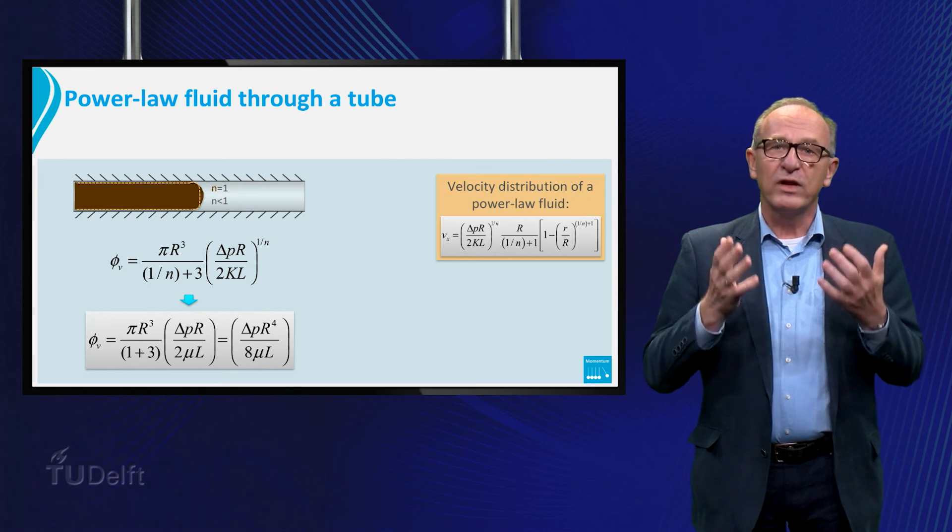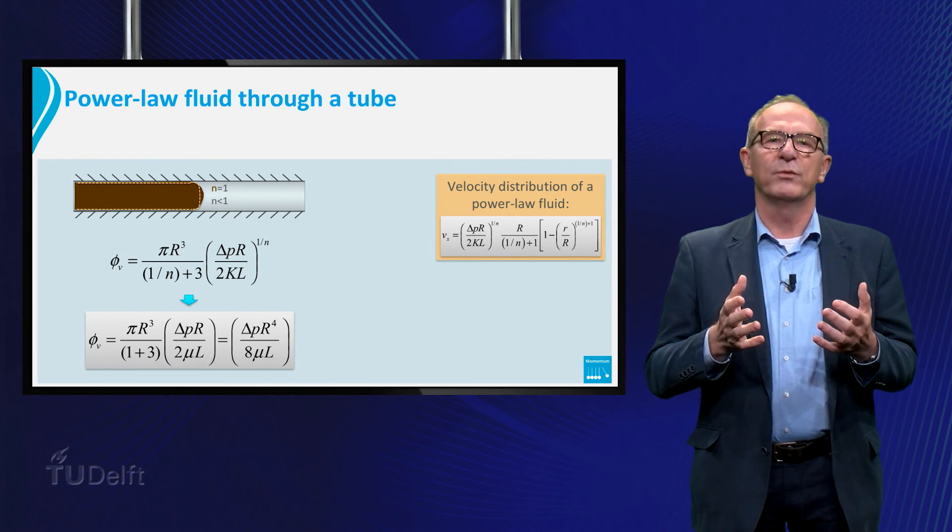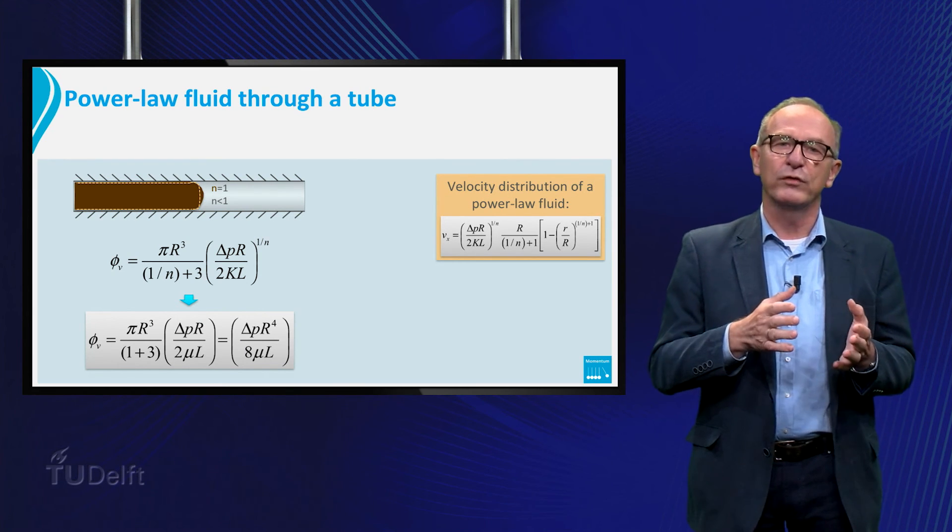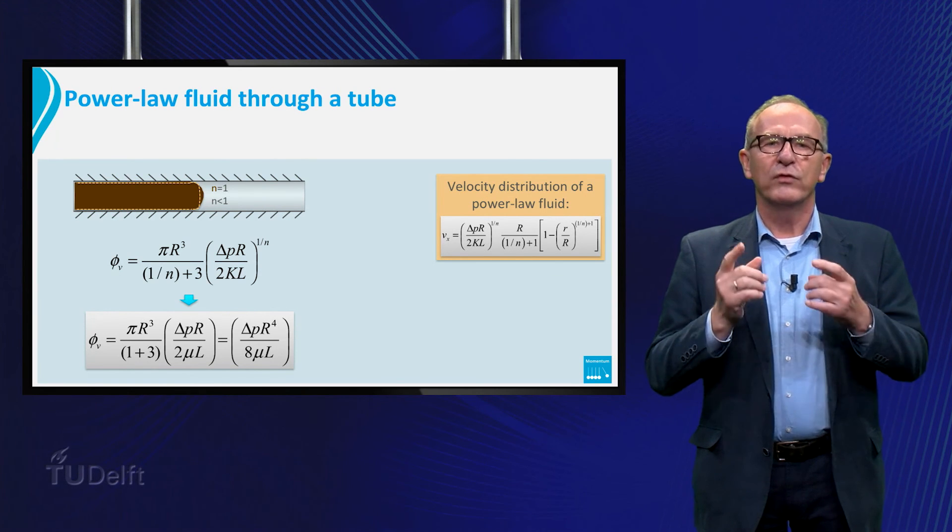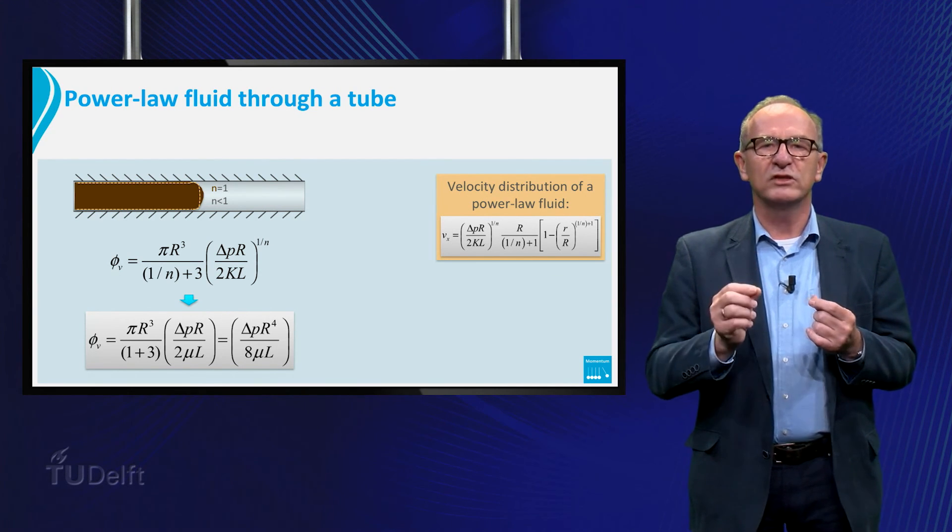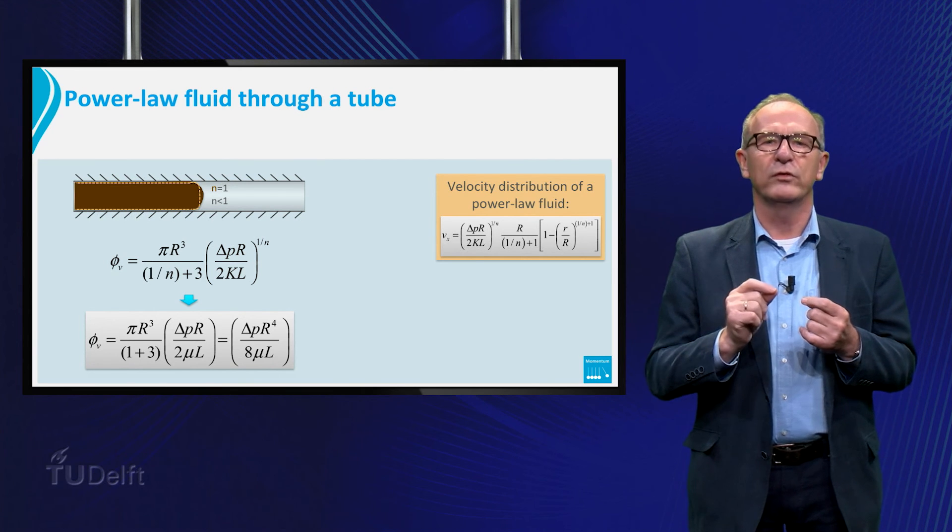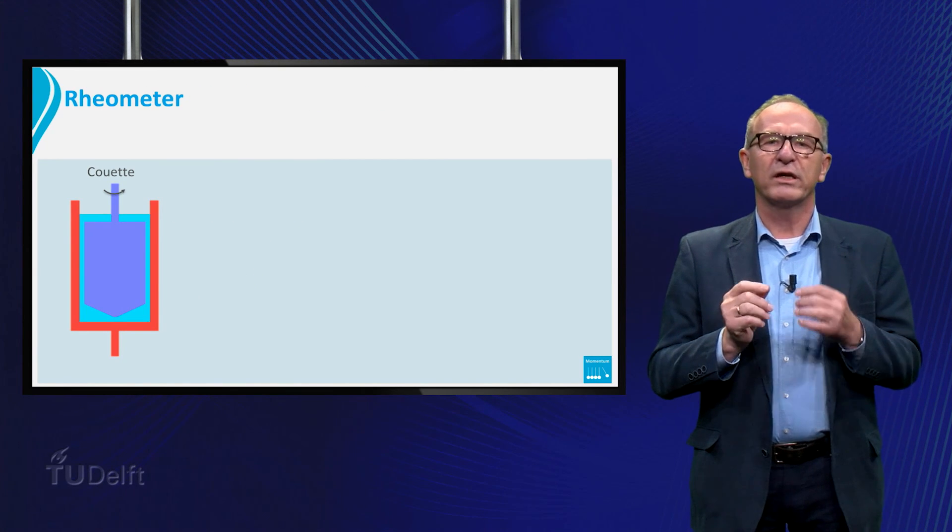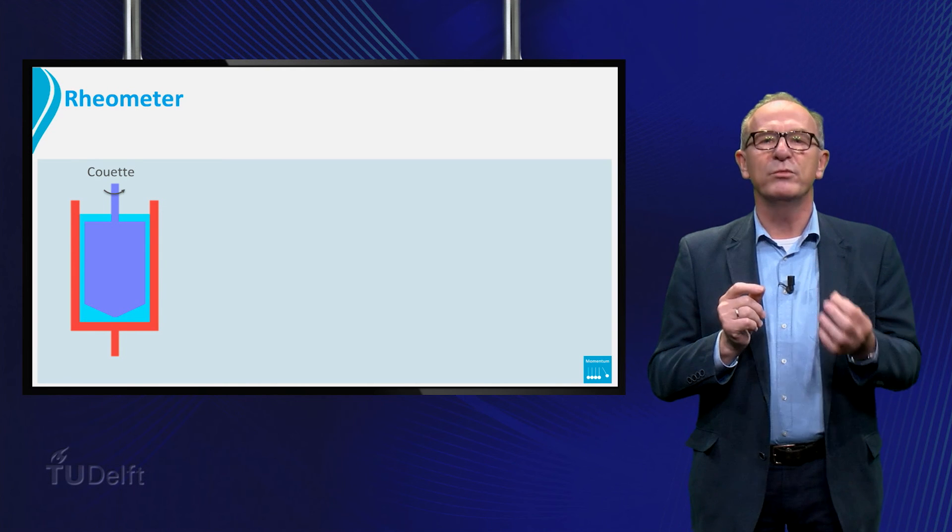It is clear that for laminar tube flow the relationship for a Newtonian fluid and a power-law fluid is quite different. For this reason it is in practice important to establish if we have to deal with a non-Newtonian fluid. This can be done by characterizing the fluid with a so-called rheometer,